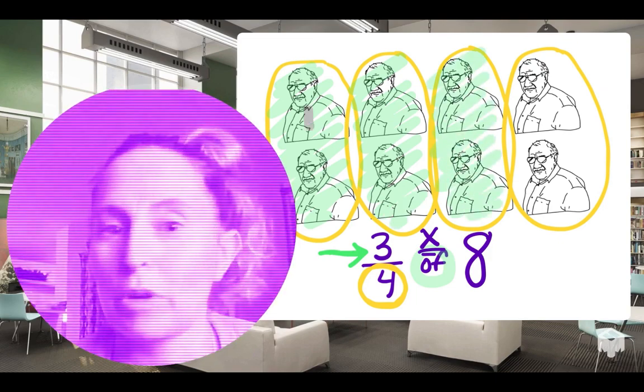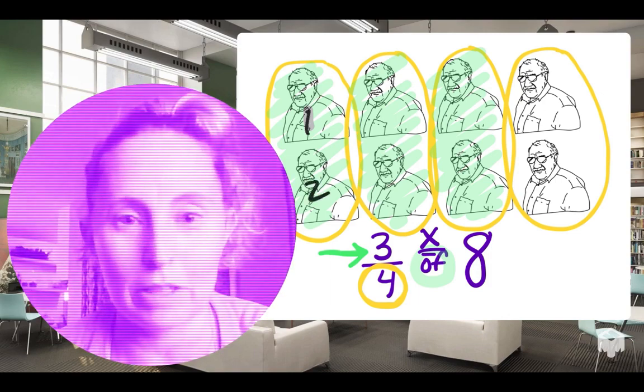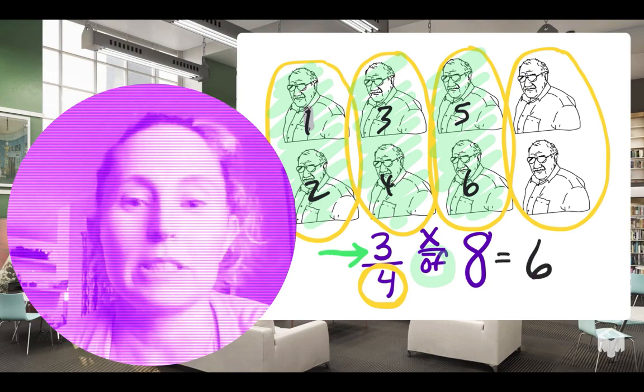And then I'm going to count up those grandpas. One, two, three, four, five, six grumpy grandpas. So in other words, three-fourths of eight is equal to six.